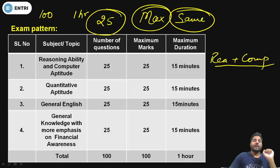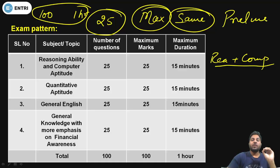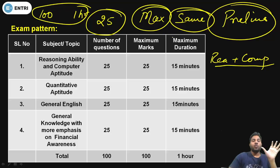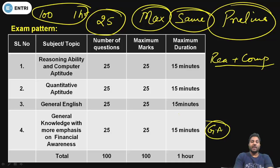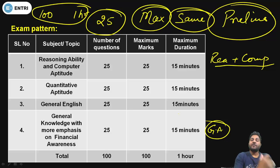That means you will have a total of 100 questions for one hour. It is similar to the prelims exam, with one exception: they have included a General Awareness segment and equalized the number of questions in each segment. So the total number of questions and total marks remain the same for one hour — meaning for each segment you will get 15 minutes.